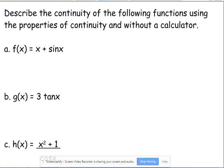So x plus sine of x: I don't know what that looks like graphically, but I'm adding these two functions together. X is continuous everywhere because it's a polynomial. Sine of x is continuous everywhere because it's a trig function that's continuous everywhere. So f(x) is everywhere continuous.